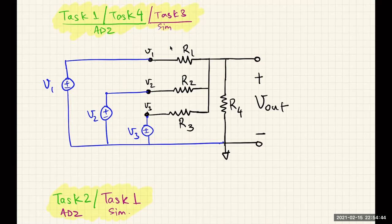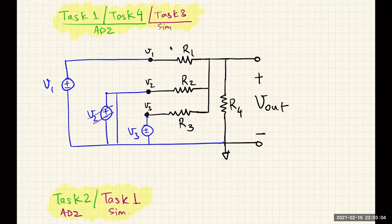When looking at the output due to only one source, say V1, you must make sure the other sources are grounded — not just off, but shorted to ground. When examining the effect of V2 on the output, you must short V1 to ground and V3 to ground. This is explicitly stated in the lab manual, but it's important to reiterate because it's easy to miss.